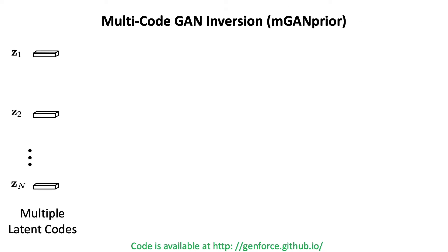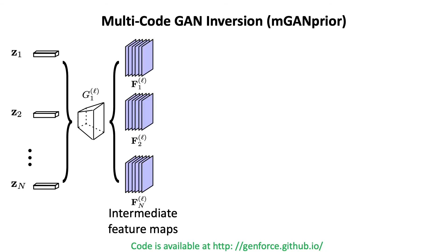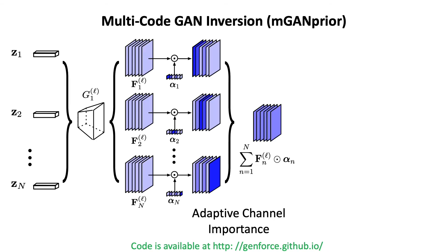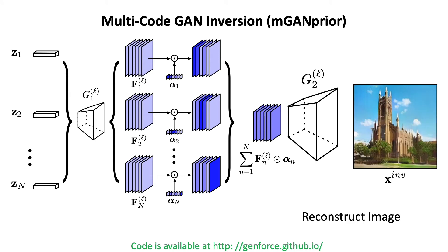In this work, we propose Multicode GAN Prior as an effective GAN inversion method. Instead of using a single latent code, we employ multiple latent codes and compose their generated intermediate feature maps using adaptive channel importance, and finally reconstruct the target real image.